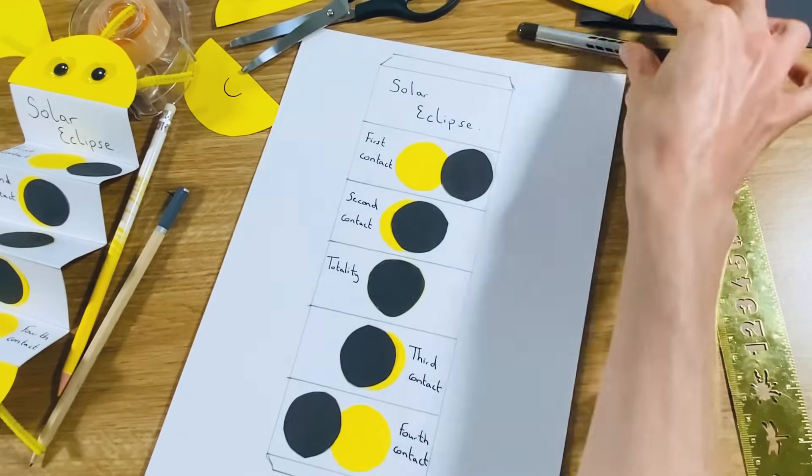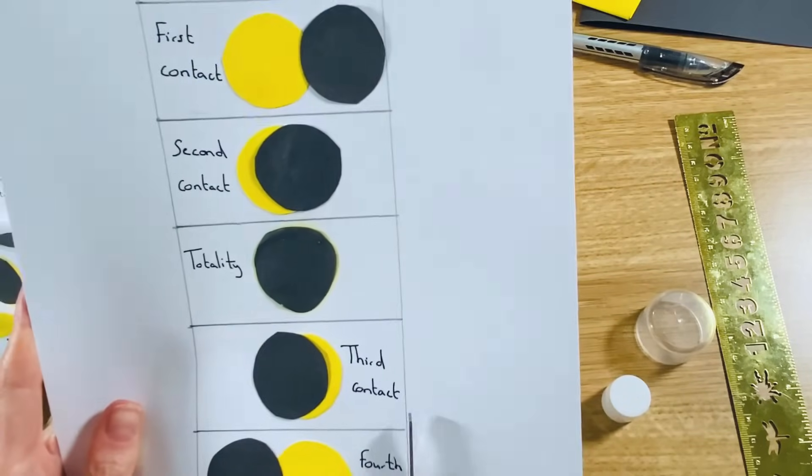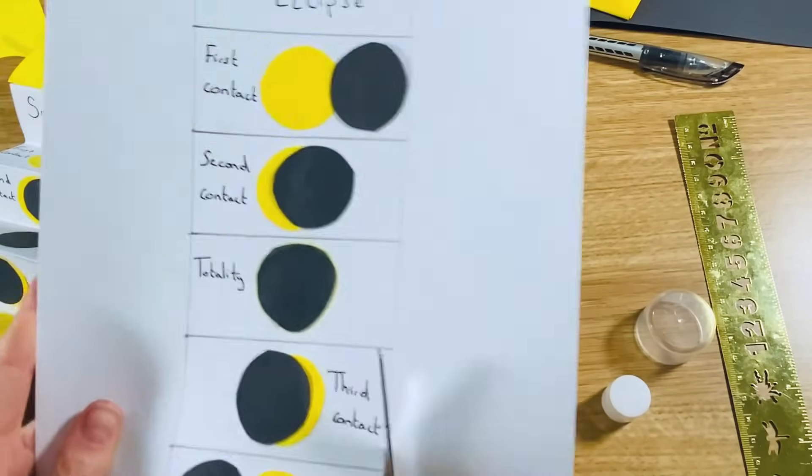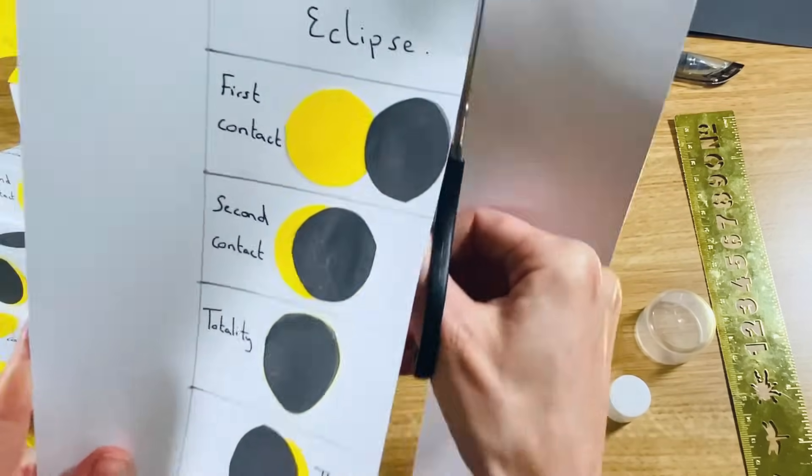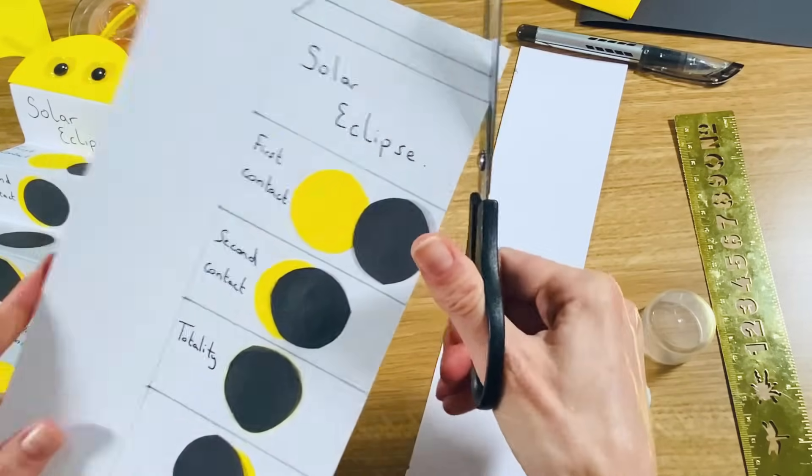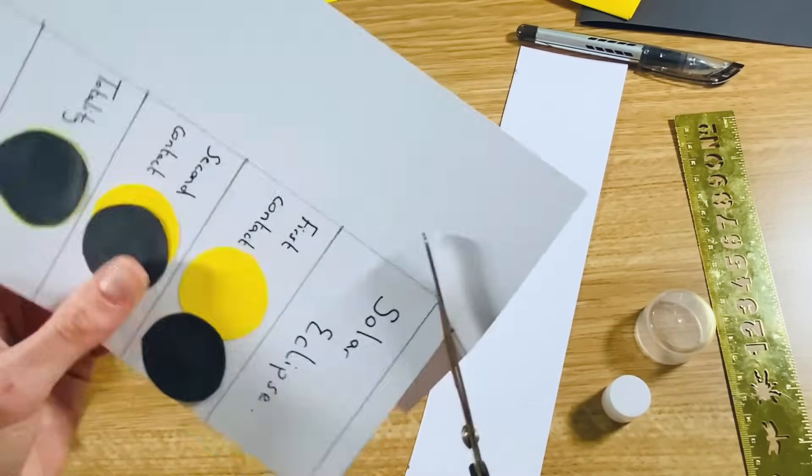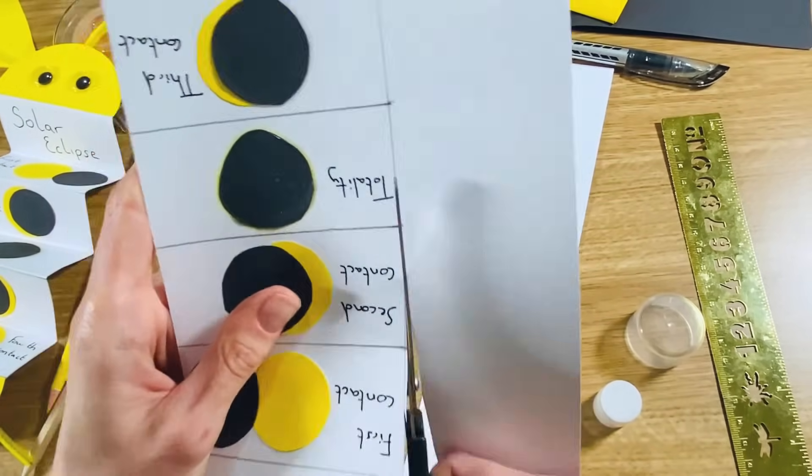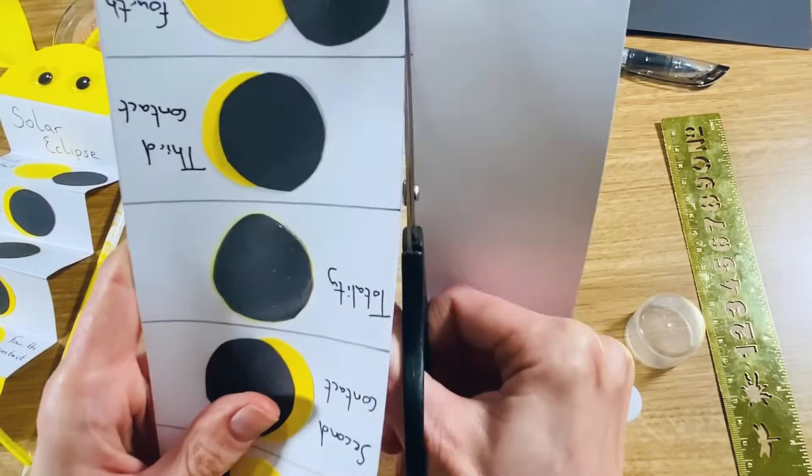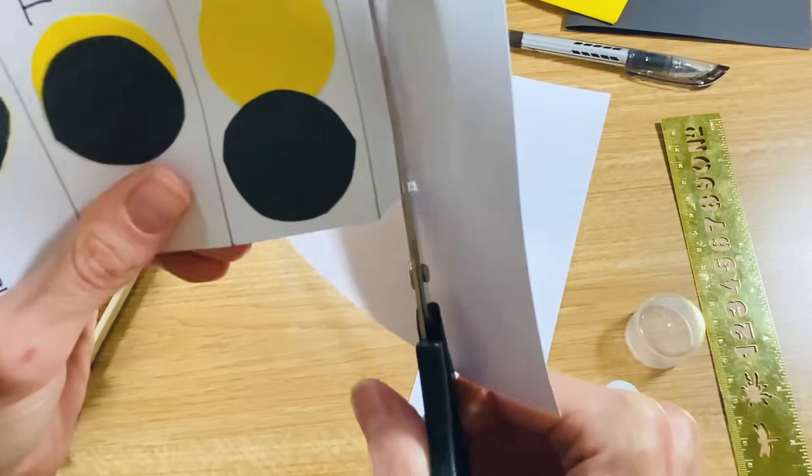Once all our stages are complete, then we can cut around the outside of our template. And we're going to need to make sure that we include those tabs on the top—those are very important for being able to put everything together. So around your six rectangles and around the tabs at the top and bottom.